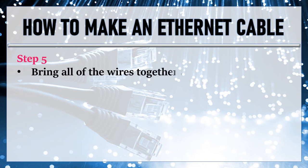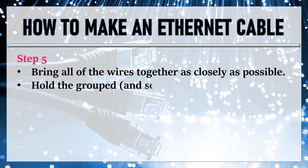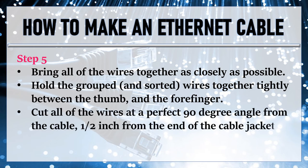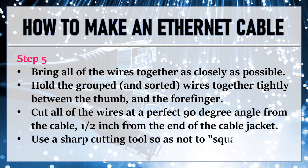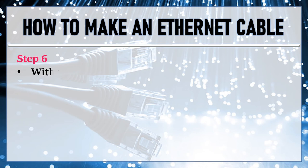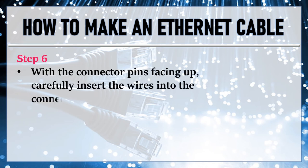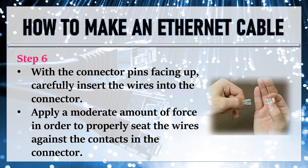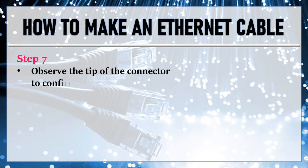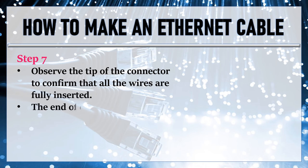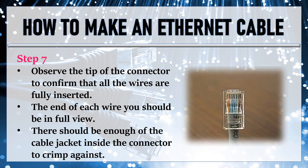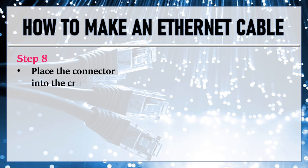Step 5: Bring all of the wires together as closely as possible. Hold the grouped and sorted wires together tightly between the thumb and forefinger. Cut all of the wires at a perfect 90-degree angle from the cable, half an inch from the end of the cable jacket. Use a sharp cutting tool so as not to squash the wire ends. Step 6: With the connector pins facing up, carefully insert the wires into the connector. Apply a moderate amount of force to properly seat the wires against the contacts in the connector. Step 7: Observe the tip of the connector to confirm that all the wires are fully inserted. The end of each wire should be in full view, and there should be enough cable jacket inside the connector to crimp against. Step 8: Place the connector into the crimp tool and squeeze hard so that the handle reaches its full swing.